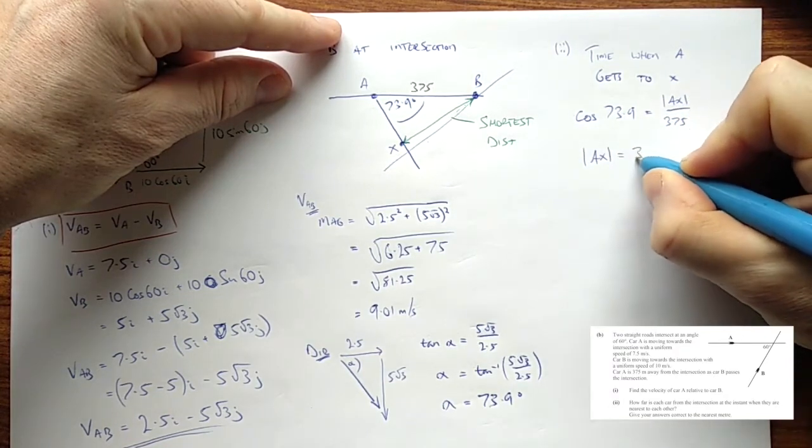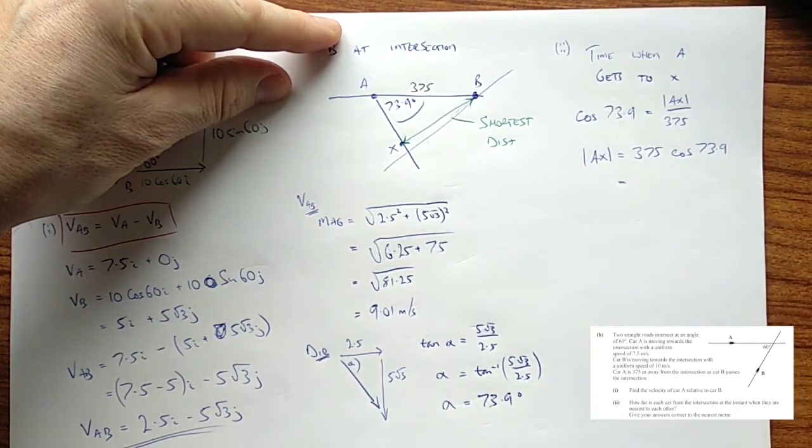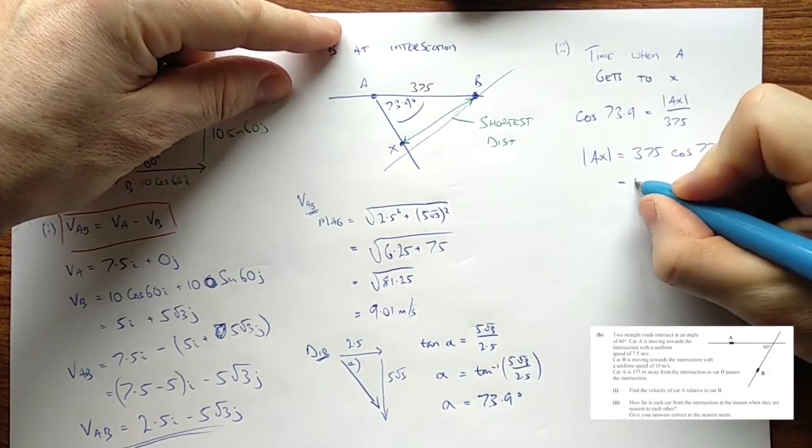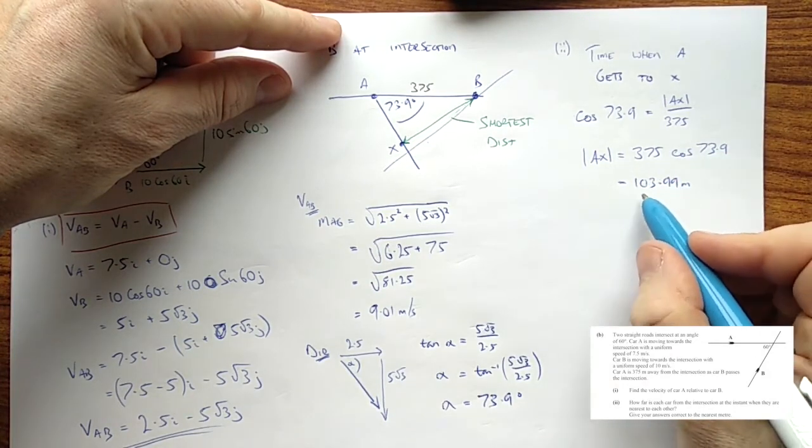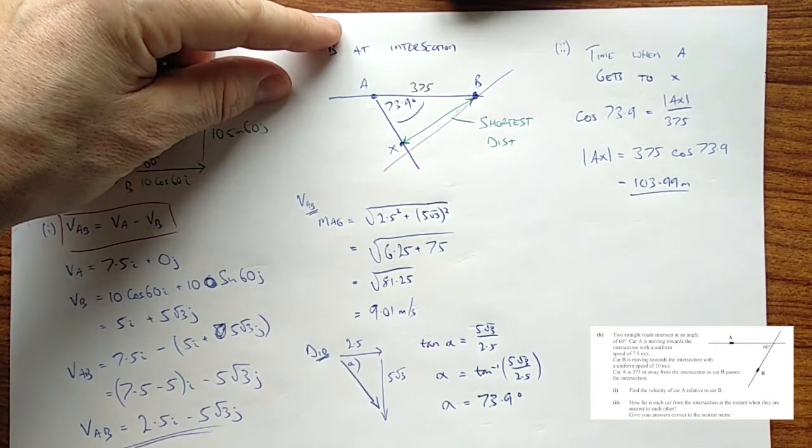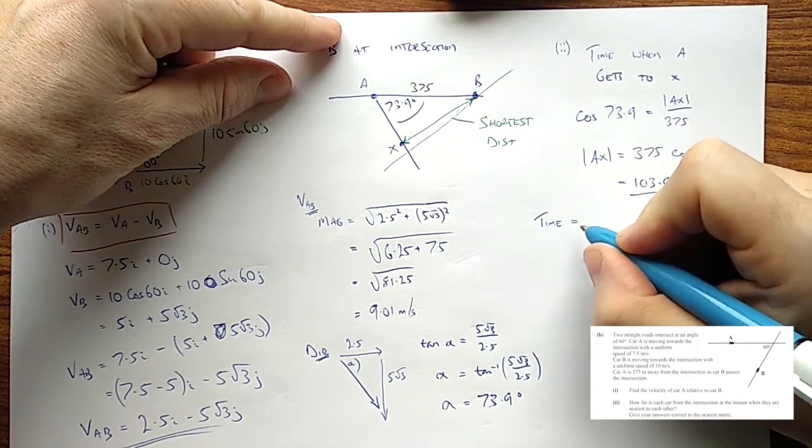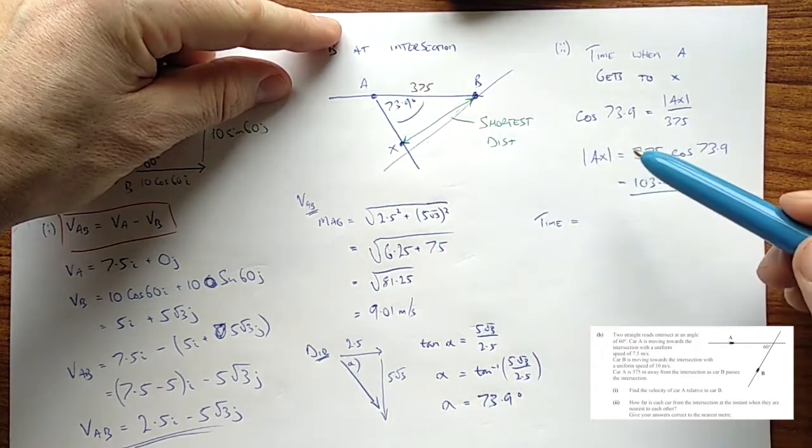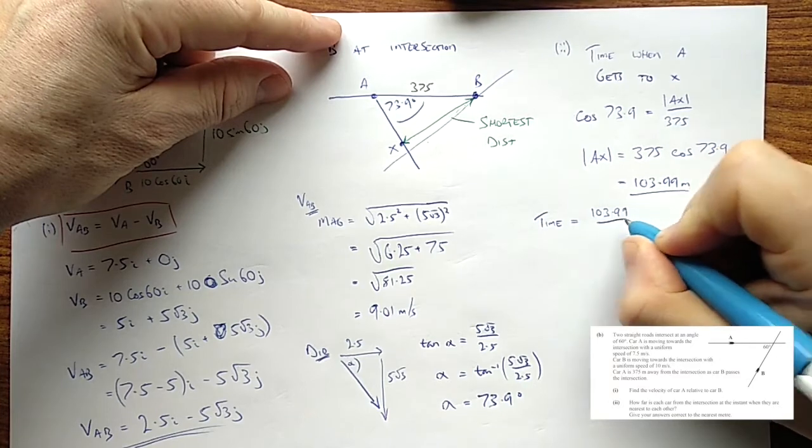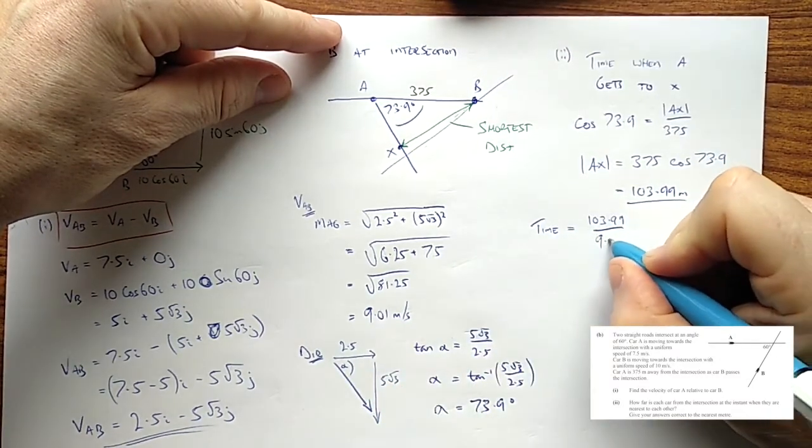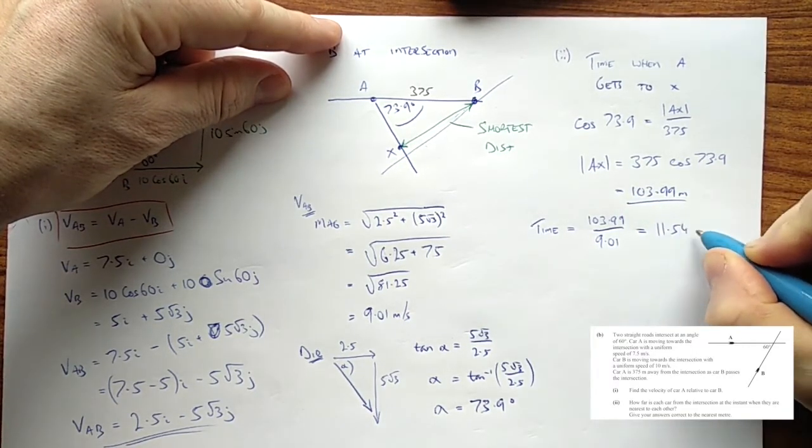So, Ax equals 375 cos 73.9 which means that Ax is 103.99 meters. Now, where are we going to go next? Well, we want to know the time it gets there. So, time to Ax. Well, the time is the distance over the speed. So, the distance is 103.99 over the speed which is 9.01 and that comes out to 11.54 seconds.